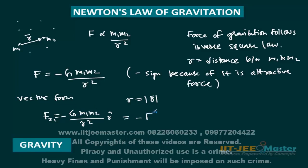We must remember that F21 vector equals negative of F12 vector, because the force acting on 2 due to 1 is equal and opposite to the force acting on 1 due to 2 — M1 attracts M2 towards it and vice versa. The negative sign is useful in difficult numericals for energy calculations, so we must remember it even though it is not required every time.